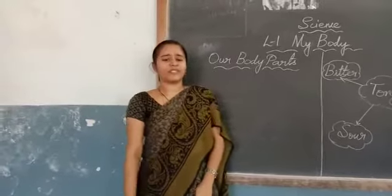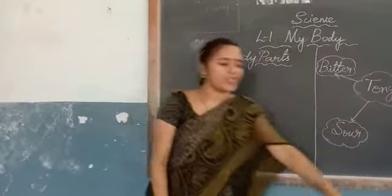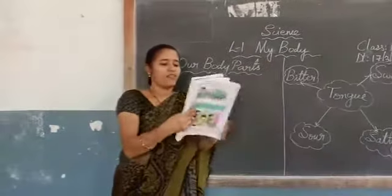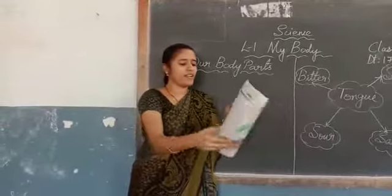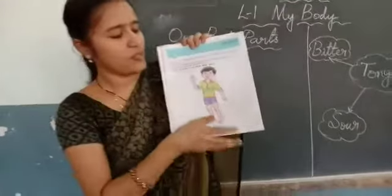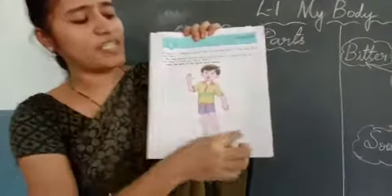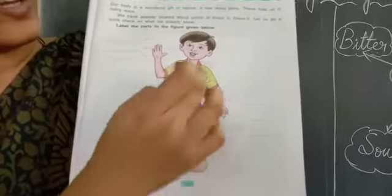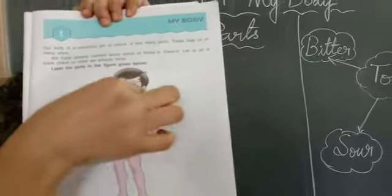Please open your textbook to lesson one, where I can show you different body parts. So you can see the picture. Our body is gifted with various body parts. You can see the first part is head, next hands, neck, and these are the shoulders.